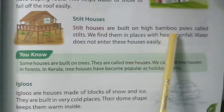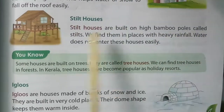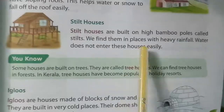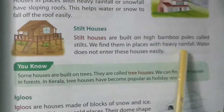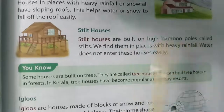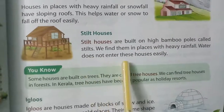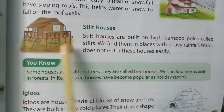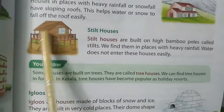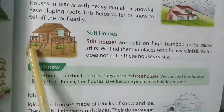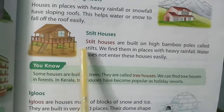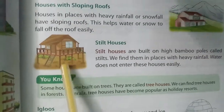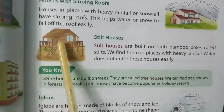Stilt houses — stilt houses are built on high bamboo poles called stilts. We find them in places with heavy rainfall so that water does not enter these houses easily. Generally they are found in forest areas or waterlogged areas.